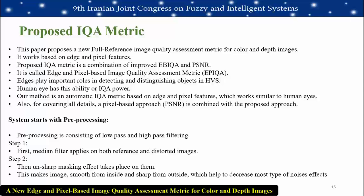This paper proposes a new full reference image quality assessment metric for color and depth images, working based on edge and pixel features. The proposed metric is a combination of an improved EBIQA and PSNR, called edge and pixel based image quality assessment metric or EPIQA. Edges play an important role in detection and distinguishing objects in the human visual system. The method is an automatic IQA metric based on edge and pixel features, working similarly to the human eye, with PSNR combined to cover all pixel-level details.